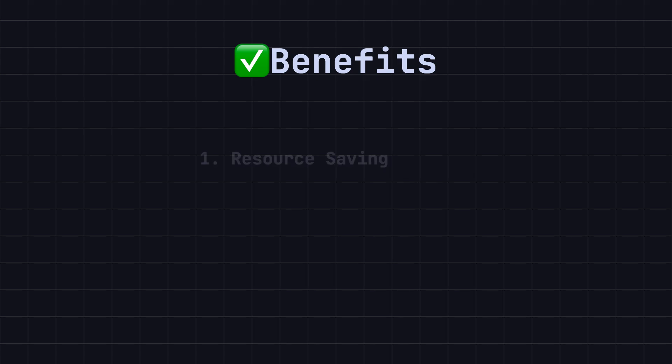So why do we use the Singleton pattern? There are several benefits to using this design pattern. First, resource saving: by limiting a class to only one instance, we can avoid significant resource consumption, especially for objects that are expensive to create. Second, global access: the Singleton pattern provides a global access point, making it convenient to share and access the single instance across different parts of the application.